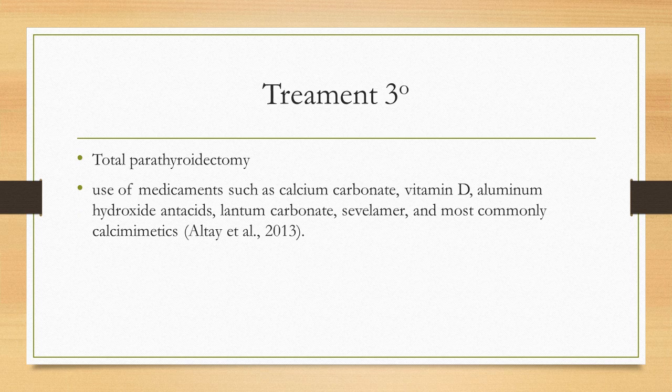Treatment of tertiary hyperparathyroidism normally involves a total parathyroidectomy. However, you can also use medicaments such as calcium carbonate, vitamin D, aluminum hydroxide antacids, lanthanum carbonate, sevelamer, and most commonly calcium emetics.